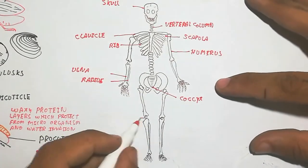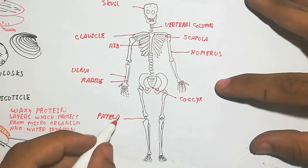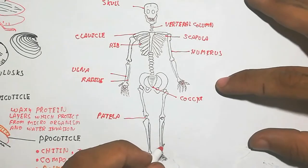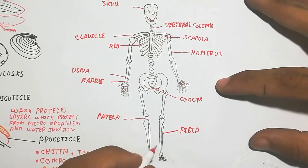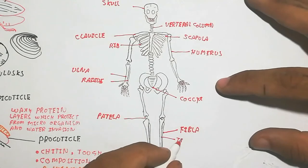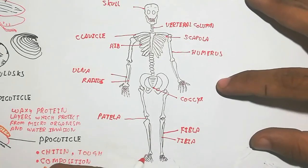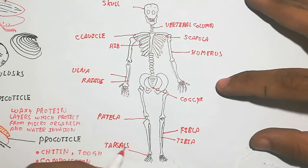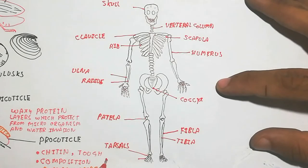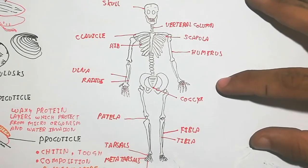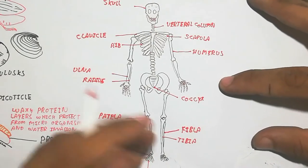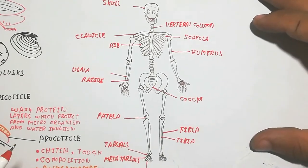The coccyx is at the end of the vertebral column. The fibula and tibia are shown in the figure. The lower limb includes tarsal, metatarsal, and phalanges bones, while the forelimb includes carpal, metacarpal, and phalanges.